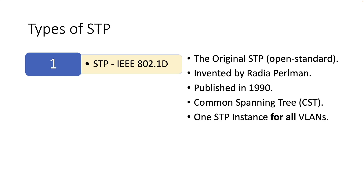Let's start with the standard STP or IEEE 802.1d. This is the original standard that provided a loop-free topology in an Ethernet network with redundant links. This original spanning tree algorithm was invented by Radia Perlman, and in 1990 the IEEE published the first 802.1d standard based on Perlman's work.